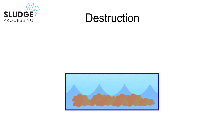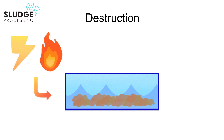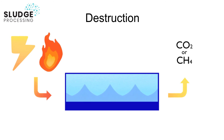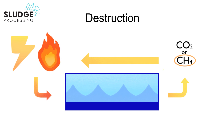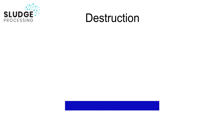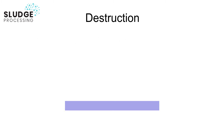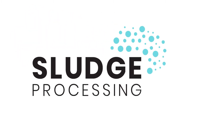Destruction or solids reduction normally uses heat or electrical energy to convert the organic carbon either to carbon dioxide if the conversion is in the presence of air, or to methane if air is excluded. The methane in the biogas can then be used to provide the heat for the digestion process. The destruction process reduces the sludge volume further and produces a stabilised solid product which is free from pathogenic bacteria and can potentially be used for things like soil conditioning, construction, or even water purification. And that's basically how sludge is processed.